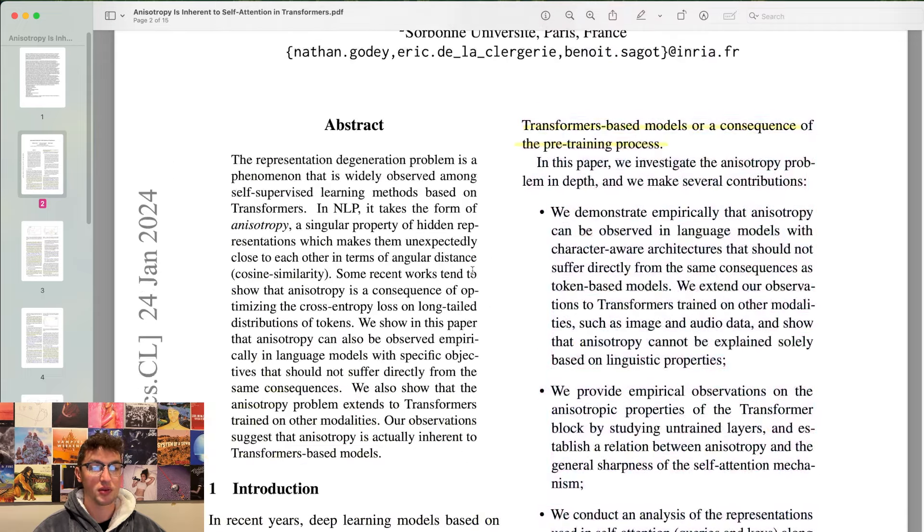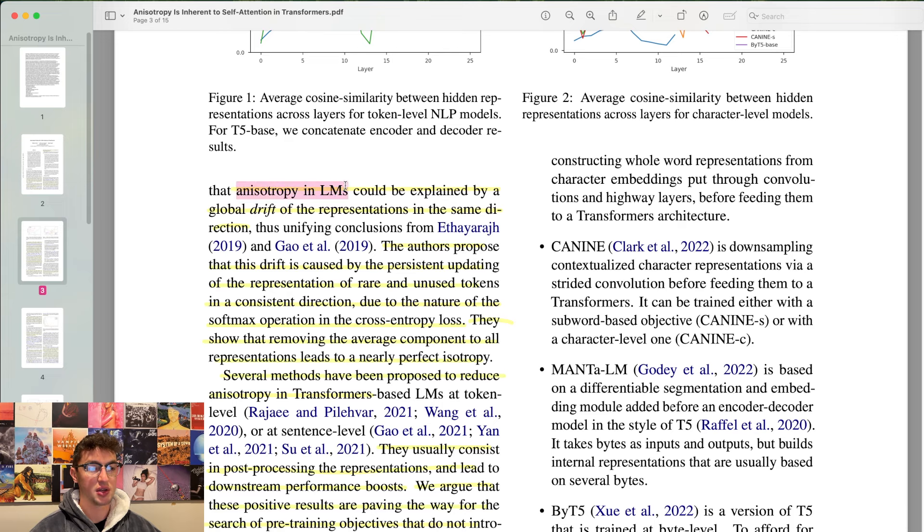Gao et al. shows that the degeneration of representations comes from the distributions of subwords in natural language, namely the existence of unused and rare tokens that tend to push all representations away from the origin towards a specific direction. The authors propose that this drift is caused by the persistent updating of the representation of rare and unused tokens in a consistent direction due to the nature of the softmax operation in the cross-entropy loss.